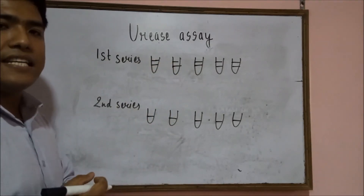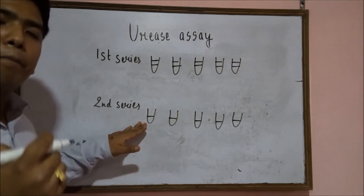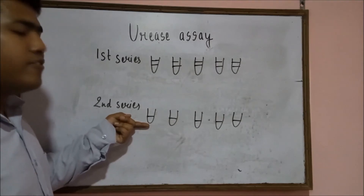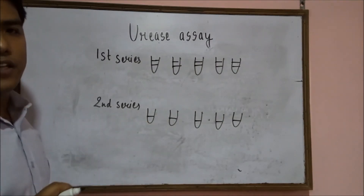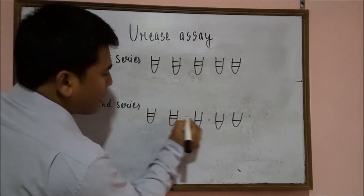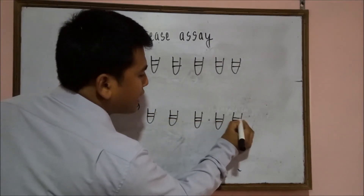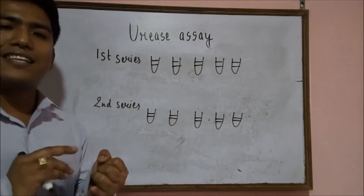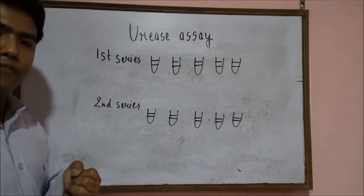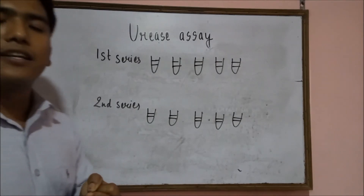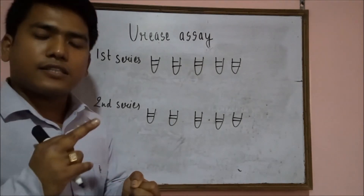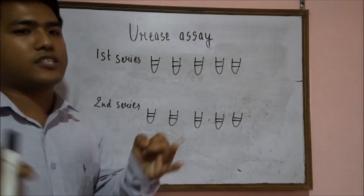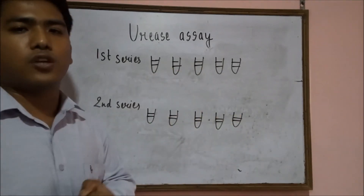In the second series, you add the sample at just half the volume of the calibrator. For example, if the calibrator volume is 2 ml, add only 1 ml of the test antibiotic. So the sample volume is half the calibrator volume in the second series. To summarize what you have added: the calibrator contains known concentrations of antibiotics, and the test antibiotic is the sample whose concentration is to be determined.